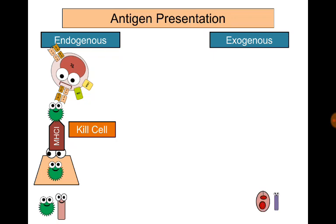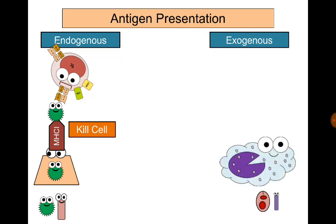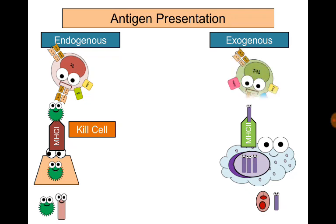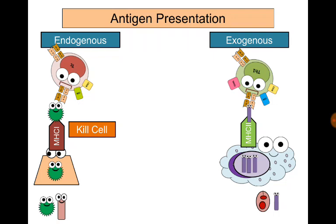Second, if we have an intracellular protozoa like Leishmania that is engulfed by macrophages and lives inside a parasitophorous vacuole, or certain bacteria that do likewise, like mycobacteria, the macrophage will show some of their antigens on its surface attached to MHC class 2 molecules. T-helper 1 cells come and identify these antigens and produce certain cytokines like interferon gamma to help macrophages kill those organisms inside them.